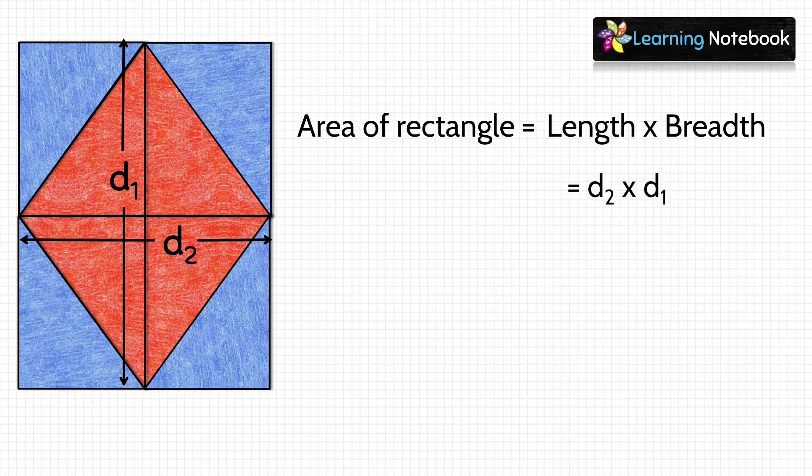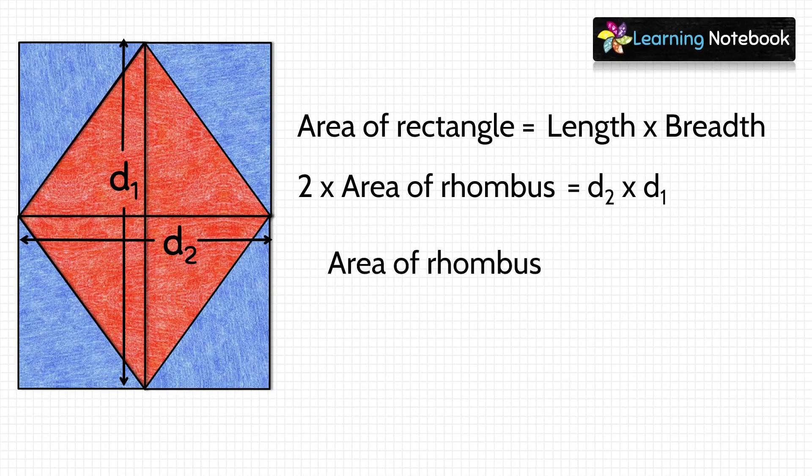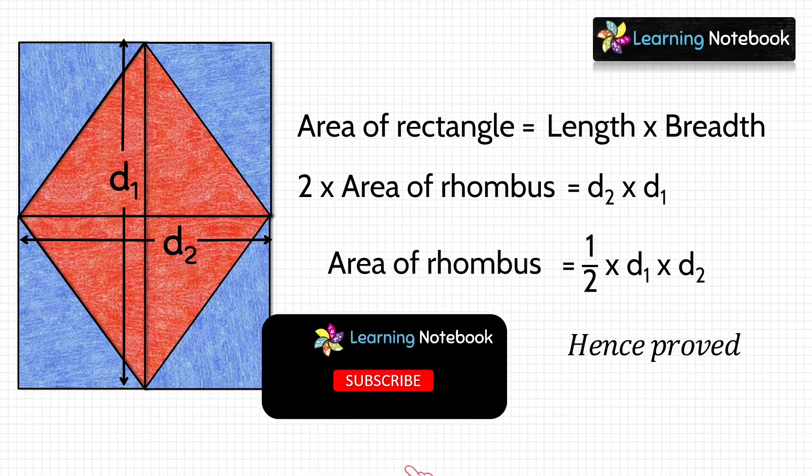But area of this rectangle is also equal to 2 × area of rhombus, because we have made these blue cutouts out of a rhombus. So it means area of rhombus equals 1/2 × d₁ × d₂. Hence proved.